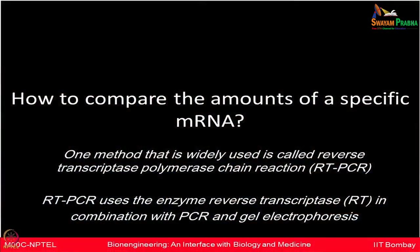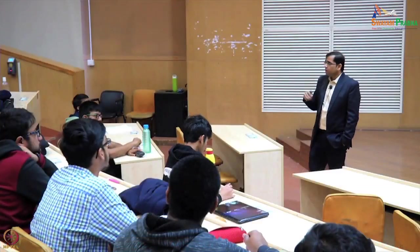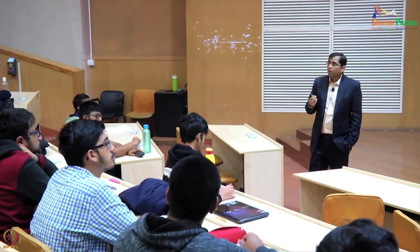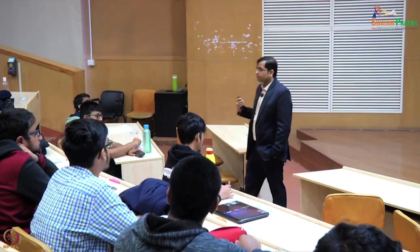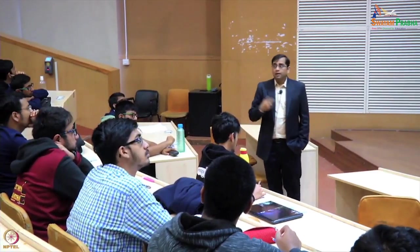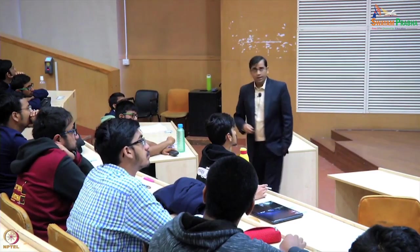RT-PCR uses the enzyme reverse transcriptase along with polymerase chain reaction and agarose gel electrophoresis — all common techniques. You are interested in looking at expression at the mRNA level, but to do that you actually make complementary DNA, or cDNA.